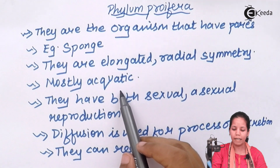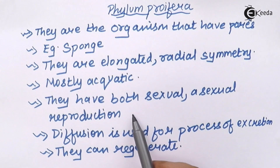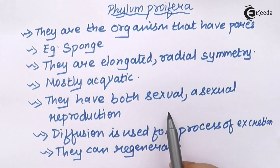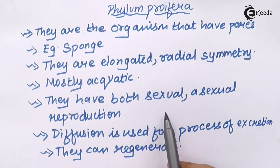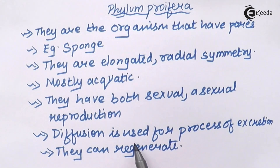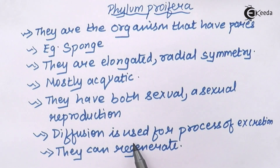Sponges are mostly aquatic in nature and they have both sexual as well as asexual reproduction. Sexual reproduction involves two parents, while asexual has an individual parent. Diffusion is the process used for excretion — it is the movement of gaseous molecules from high concentration to lower concentration.